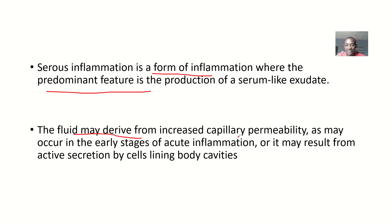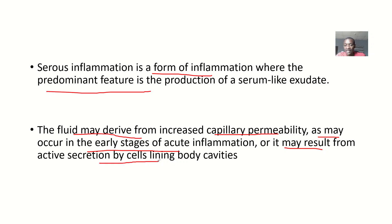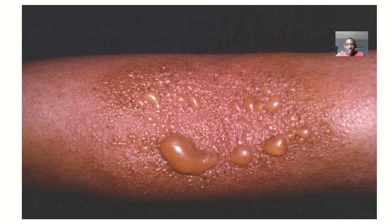The fluid may be derived from increased capillary permeability — meaning fluid is coming out from the blood vessels into the interstitium. This may occur in the early stages of acute inflammation, or it may result from active secretions of cells lining body cavities. Serous fluid will look as if it's all water droplets, like a serum.